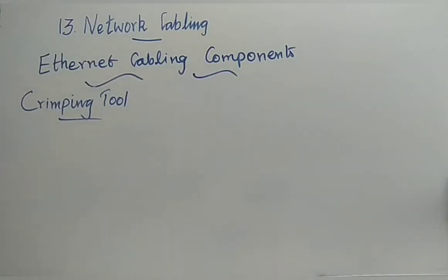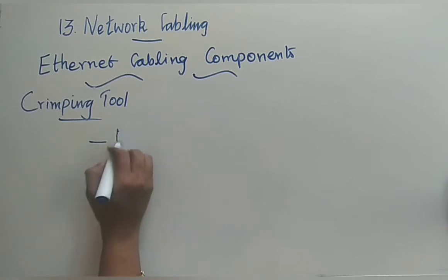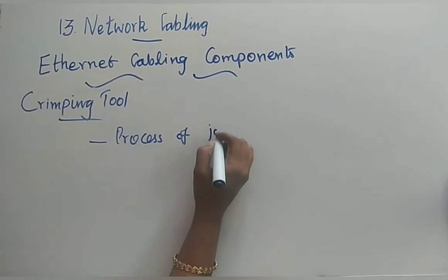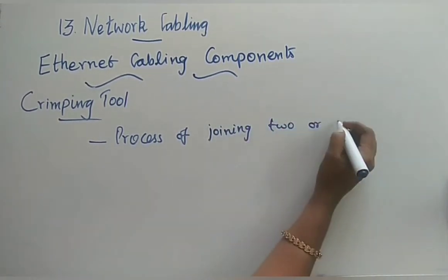Next we are going to see the crimping tool. We have finished discussing the cables, the connector, and the ethernet port. Now before seeing the tool, let's understand what crimping means. Crimping is the process of joining two or more pieces of wire by deforming one or both of them to hold each other.